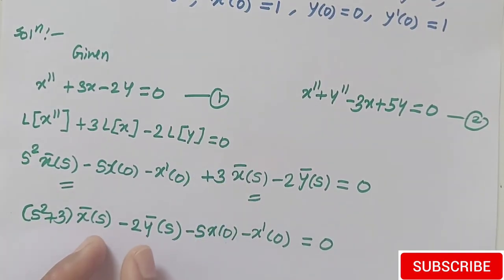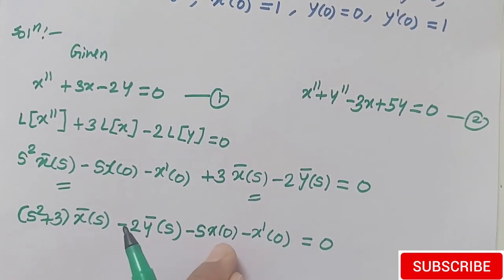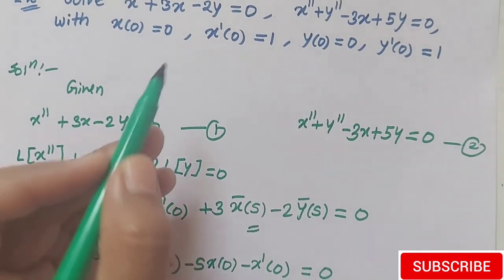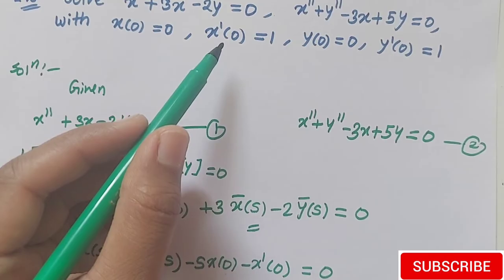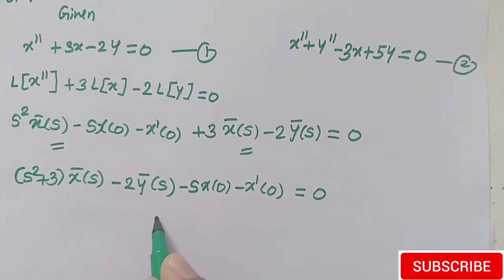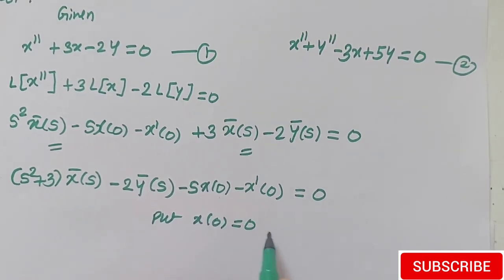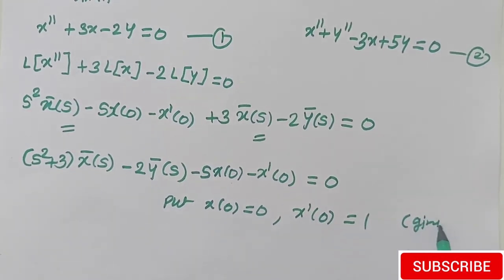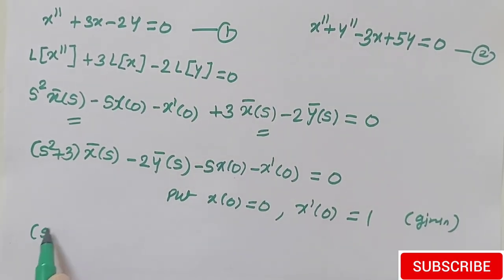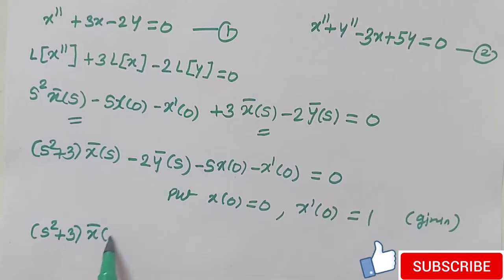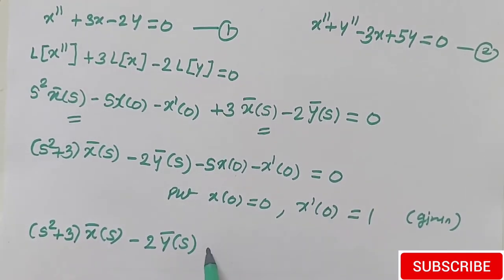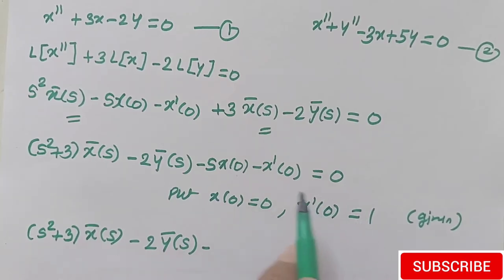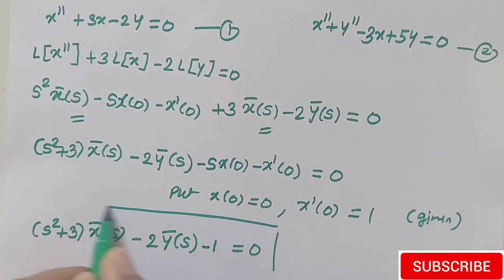In the next step we put the values of x(0) and x'(0) given in the question. Here x(0) = 0 and x'(0) = 1. Substituting these given conditions: (s² + 3)·X̄(s) minus 2·Ȳ(s) — since x(0) = 0 this term is completely 0, and x'(0) = 1 so we get minus 1. This is our equation A.